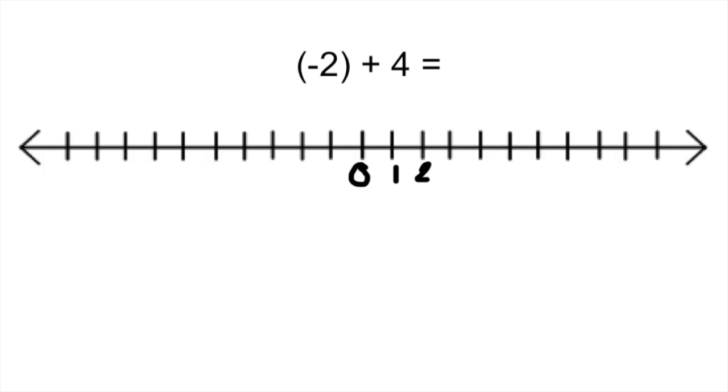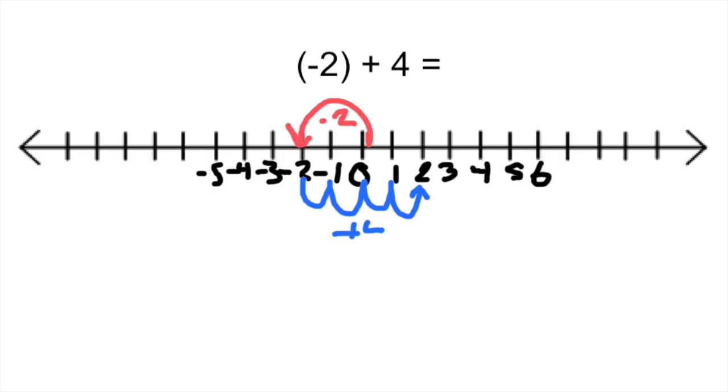Negative 2 plus 4. Let's start by making our number line, and then remember you start at 0 and go in the direction of the first number. So 0 to negative 2. And then from negative 2, we need to go up 4 because we're going positive 4, which will have you end up at 2. So negative 2 plus 4 is positive 2.